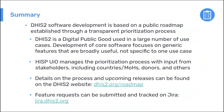To summarize: DHIS2 is developed based on this roadmap process — a public process where we gather and consolidate all requests and prioritize them, with ministry implementations as the top priority. You can follow the roadmap on dhis2.org/roadmap, and if you have feature requests or want to report a bug, you do this through Jira.